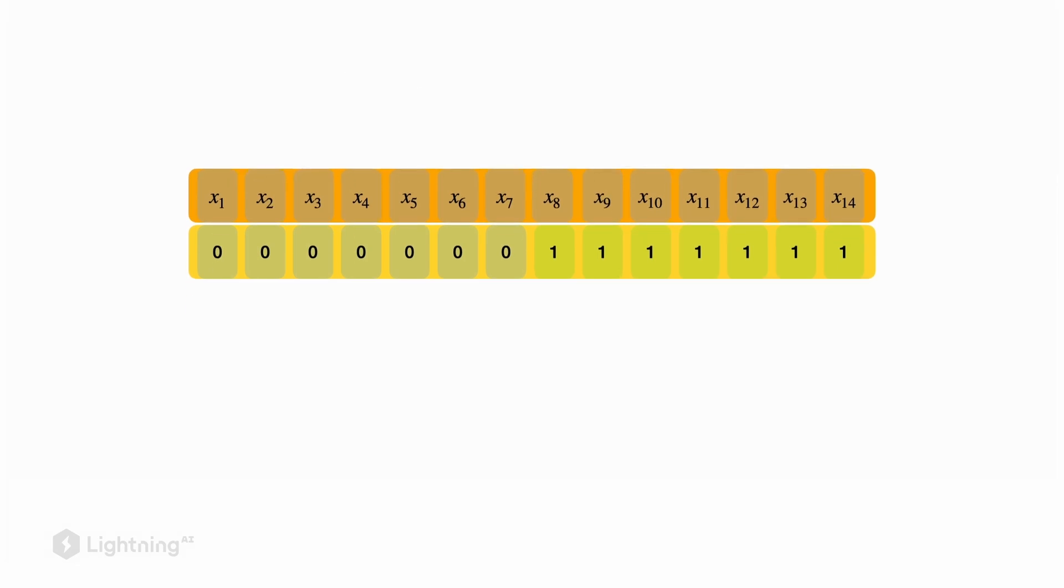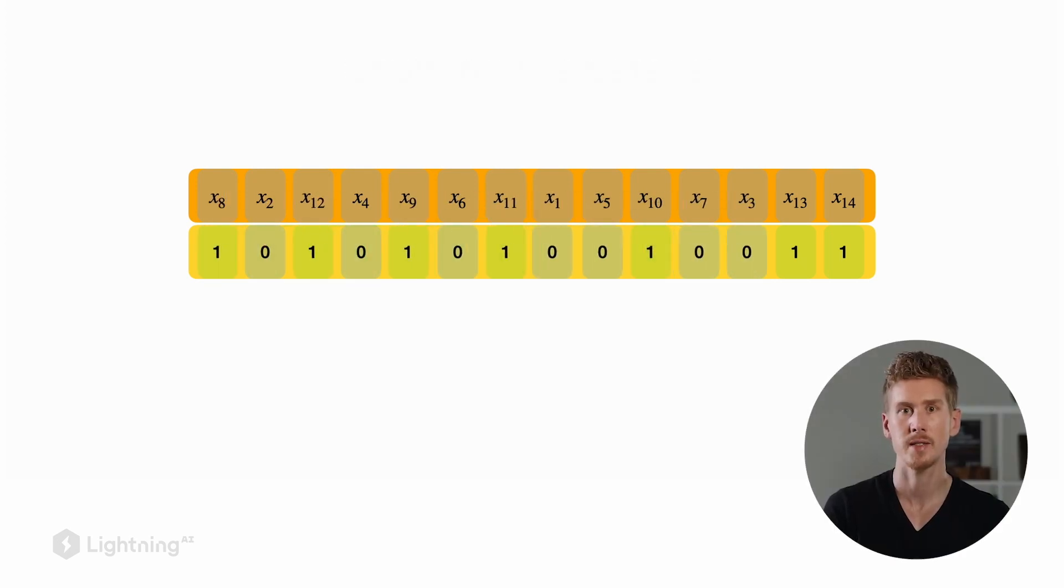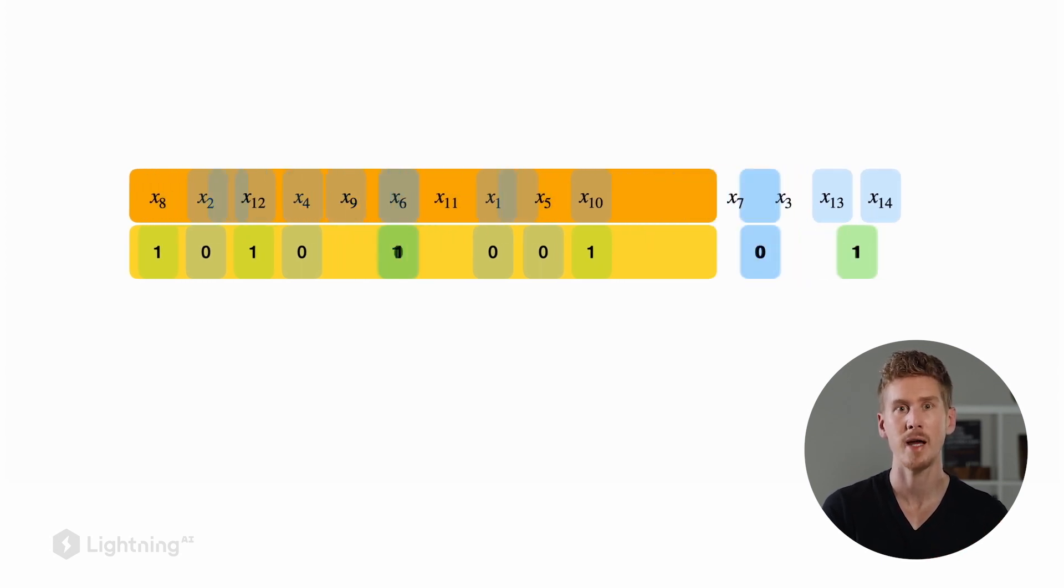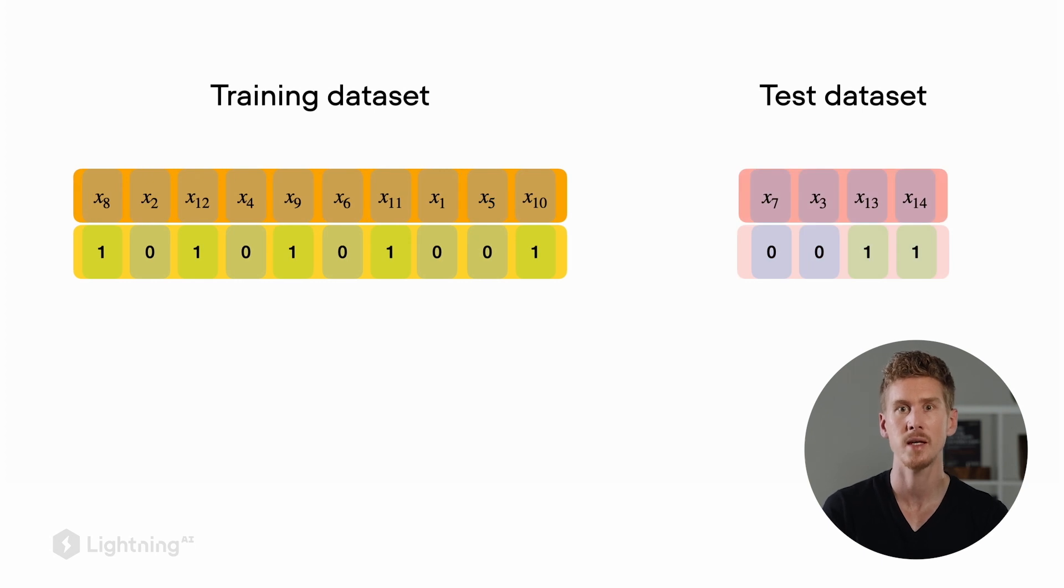First, we have to shuffle our dataset. Note that when we shuffle the dataset, the correspondence between training example and label still remains intact. Then once we shuffled the dataset, we can divide it into a training dataset and a test dataset. If we haven't shuffled our dataset, the problem would be that all the test data points would be from class 1. So we can see that shuffling is actually often important.